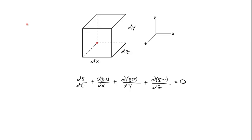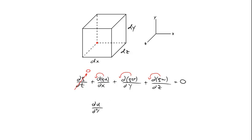There are a couple of common simplifications to the continuity equation. First, if the flow is steady, density doesn't change with respect to time, leaving the sum of the three spatial terms equal to zero. Second, if the fluid is incompressible, density is not a function of x, y, or z — and since it can't change with time either, density factors out entirely. The simplified incompressible continuity equation becomes: partial u/partial x plus partial v/partial y plus partial w/partial z equals zero.